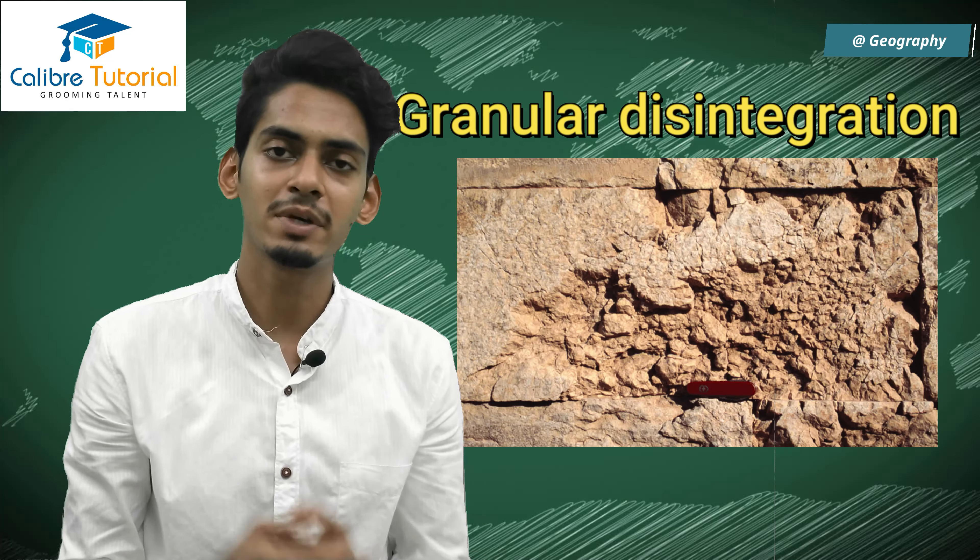Let's start with physical weathering. Physical weathering happens due to 4 things: temperature, frost action, wind, and moisture. Starting with temperature — physical weathering by temperature is also called block disintegration. Let's take the example of a desert region.